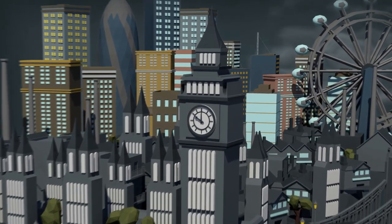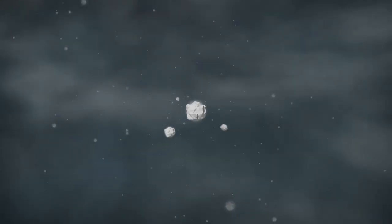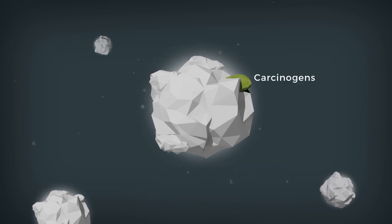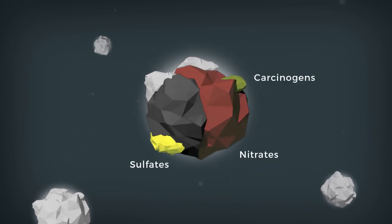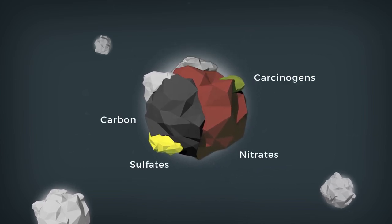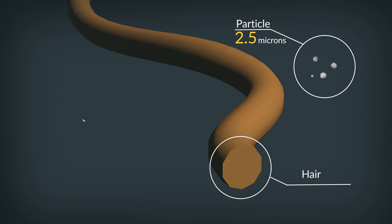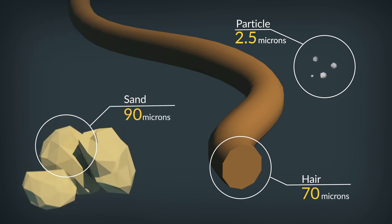Air pollution isn't made up of one thing. It's a cocktail of toxic gases and particles. These minuscule particles are comprised of a complex mixture of carcinogens, sulfates, nitrates, elemental carbon, and toxic metals like lead and arsenic. It's hard to imagine the size of these particles. It helps to compare it with the width of a human hair or a grain of sand.